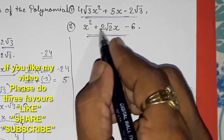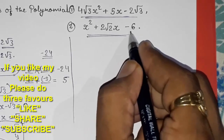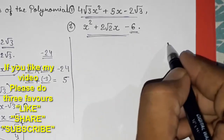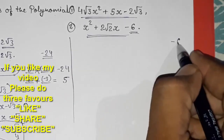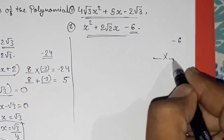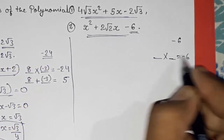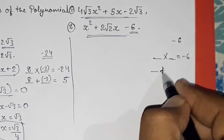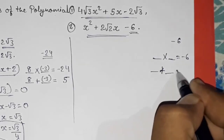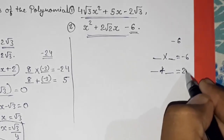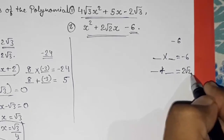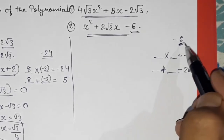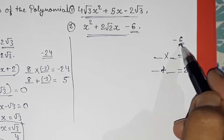Now for the second sum: x² + 2√2x − 6. Here the coefficient of x² is 1, so 1 × (−6) = −6. We need to find factors of −6 such that their product is −6 but their sum is the middle term, 2√2. Now the problem arises — we have to find factors of 6 that work with the √2.